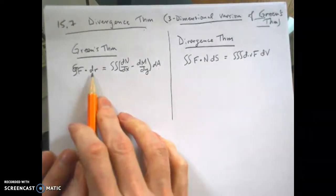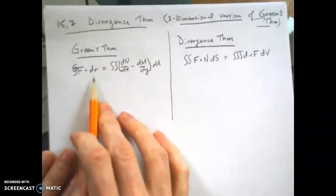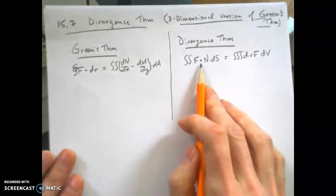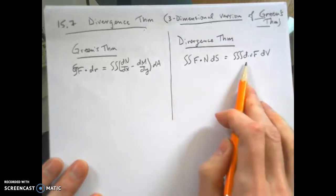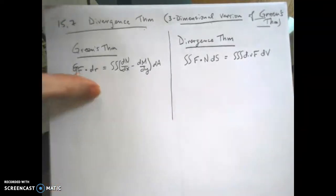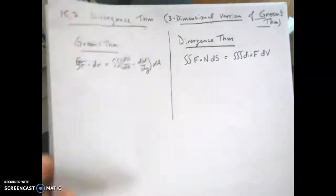So for this one, you have a curve that encloses a region, a curve in two dimensions that encloses a region. Here we have a surface in three dimensions that encloses a volume. So I'm going to go to another page, and I'm going to draw this out real quick.